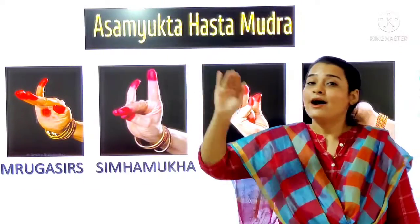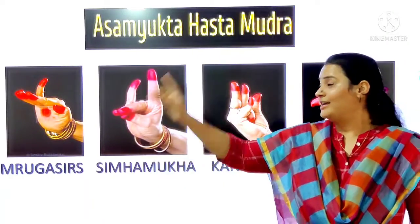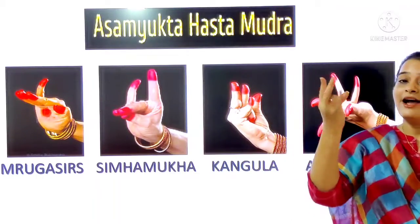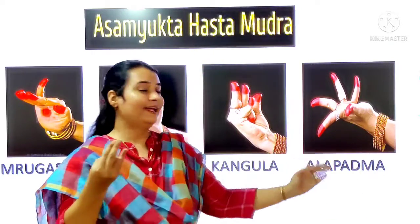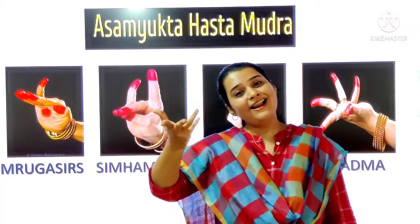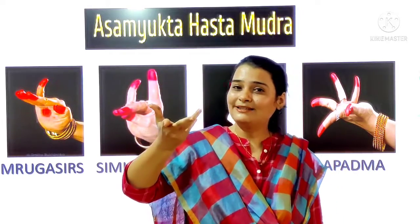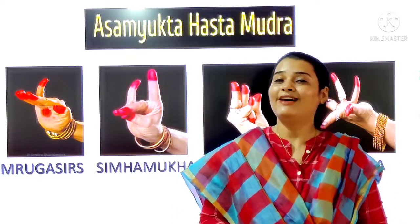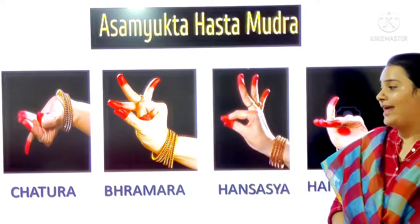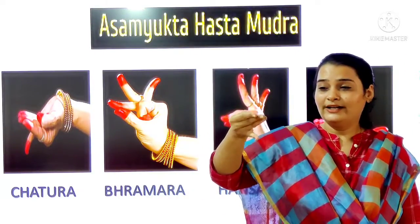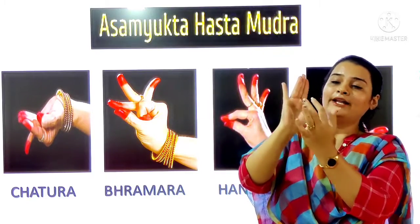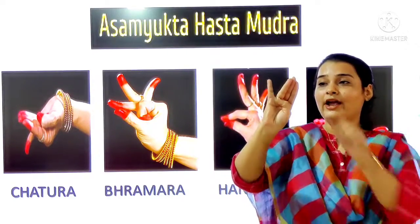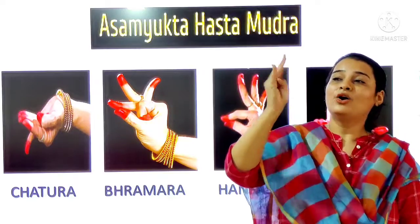Kapitha, Kataka mukha — here we can all see Kataka mukha. Next one: Suji, Chandragala, Padmakosha. Then Sarpashishal. Next: Vrugashishal. Sihamukha. Then Kangula — after Kangula, which mudra comes? Alapadma. This is alapadma.